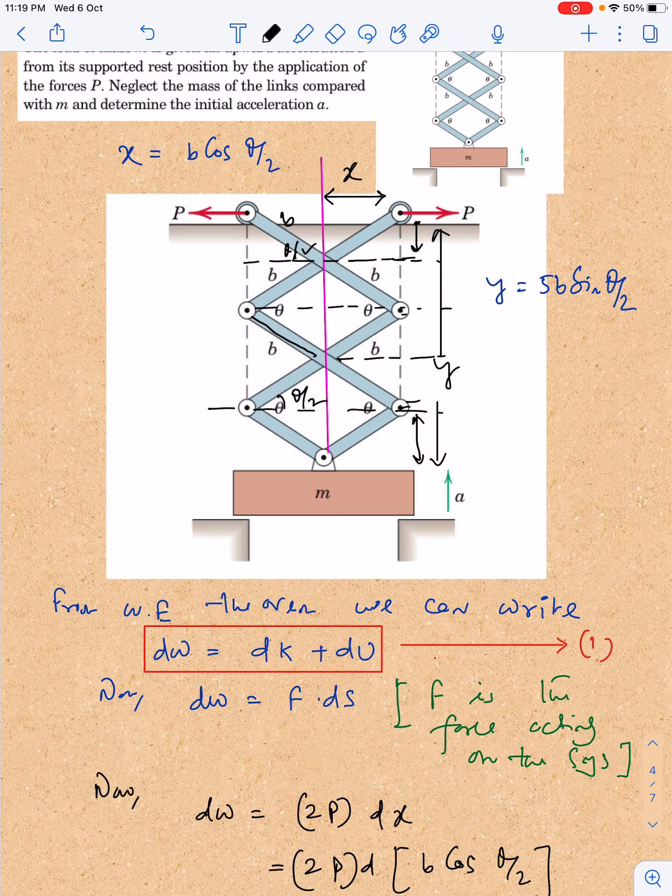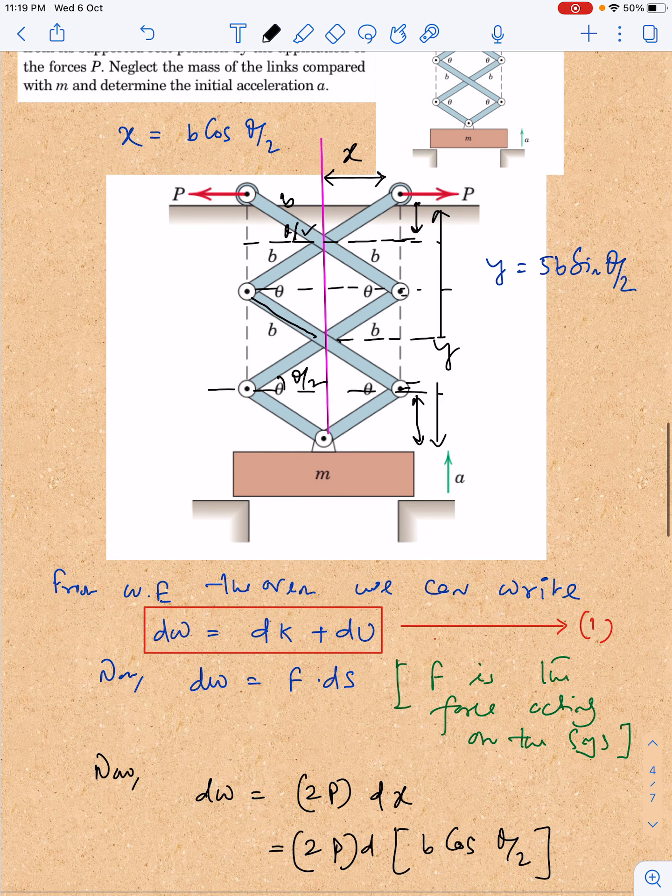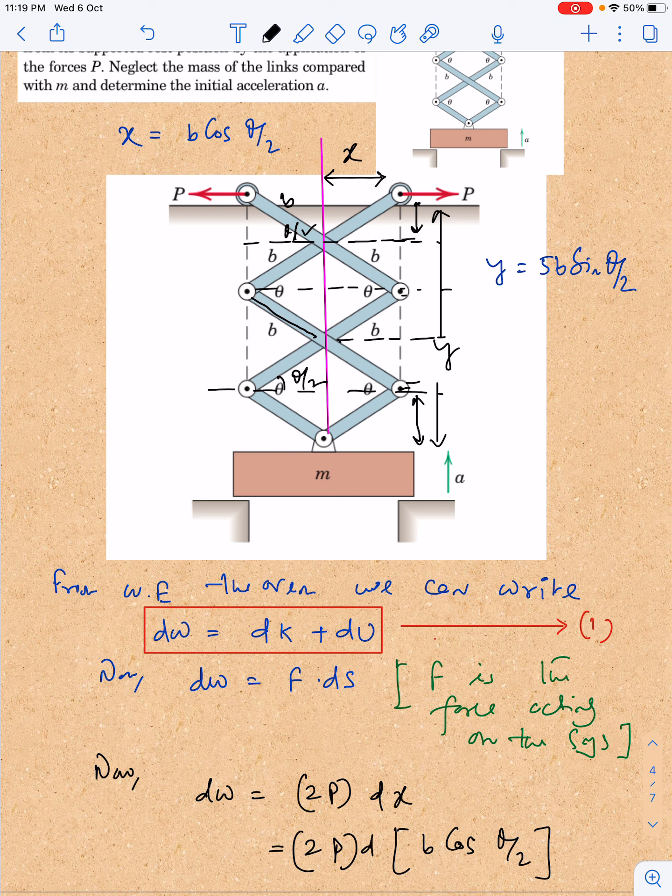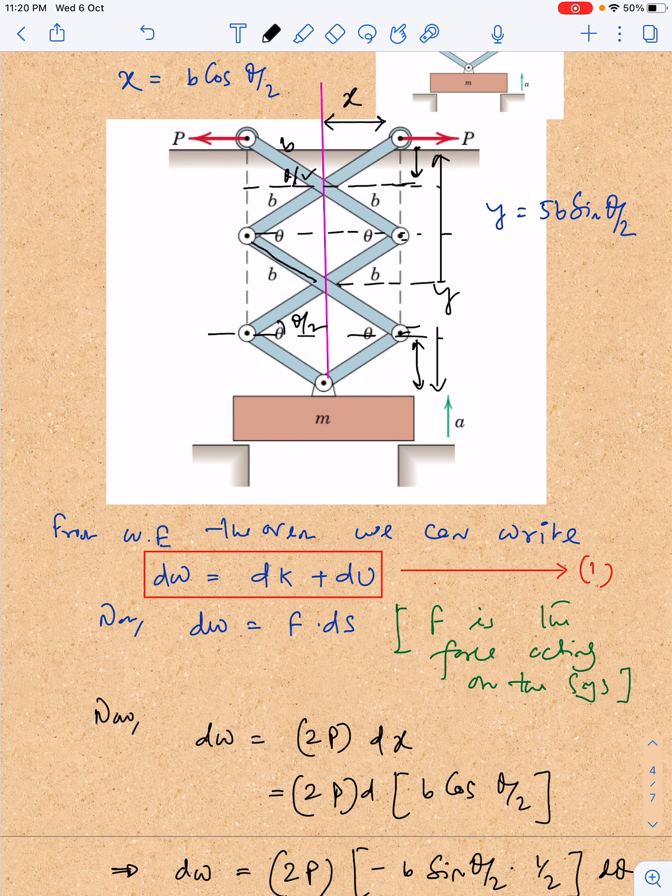Now if we look at work-energy theorem, we can write that work done by all the forces acting on the system is equal to change in kinetic energy of the system. How many forces are doing work here? Two forces only: one is this horizontal external force and another is force due to gravity. So if I concentrate on calculating the work done due to the external force, basically two forces are acting on the system, P and P, so total force is 2P. Work done will be 2P into dx. If you look at this particular force, there's a huge chance you can do a silly mistake—you can think the net force is zero, but it's not like that.